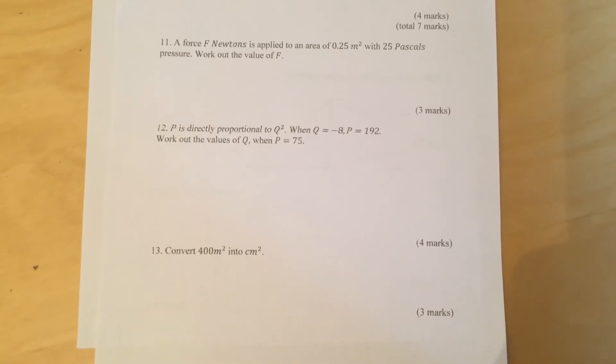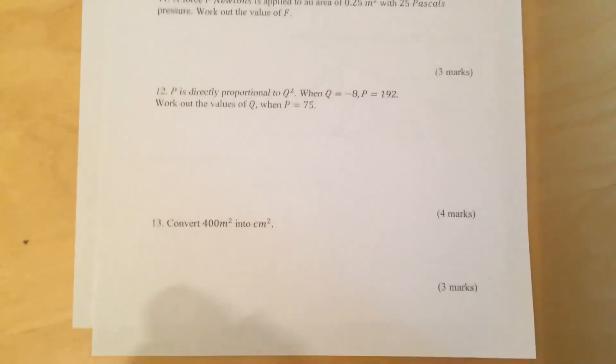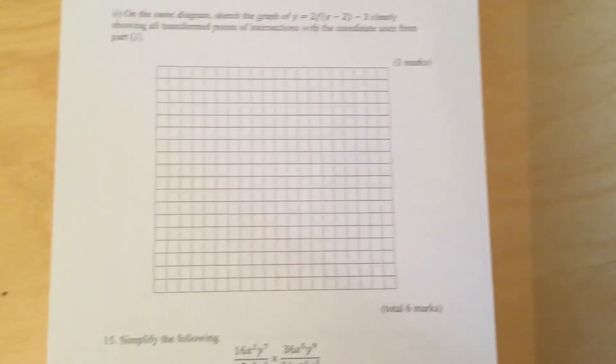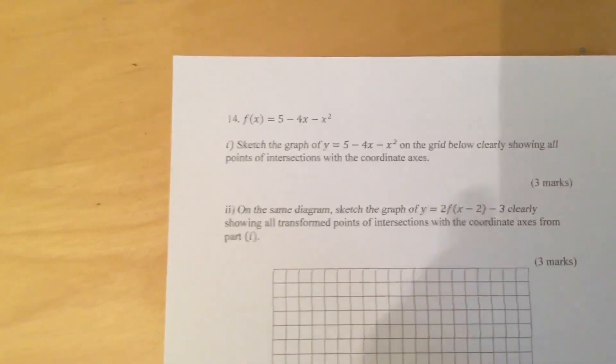Convert 400 meters squared into centimeters squared. Question 11. So question 13, that is.